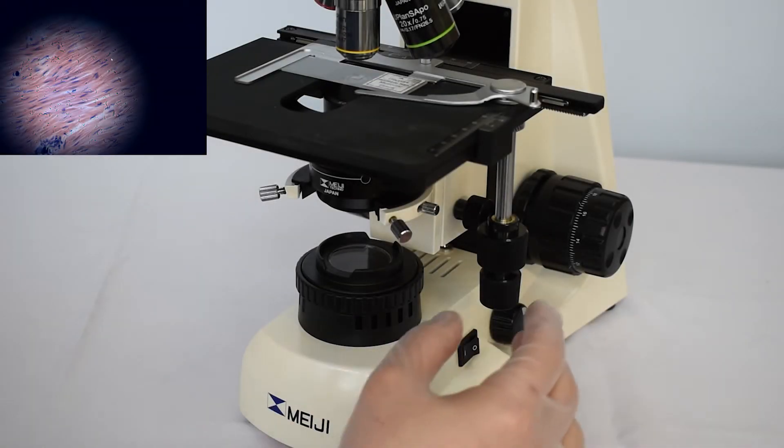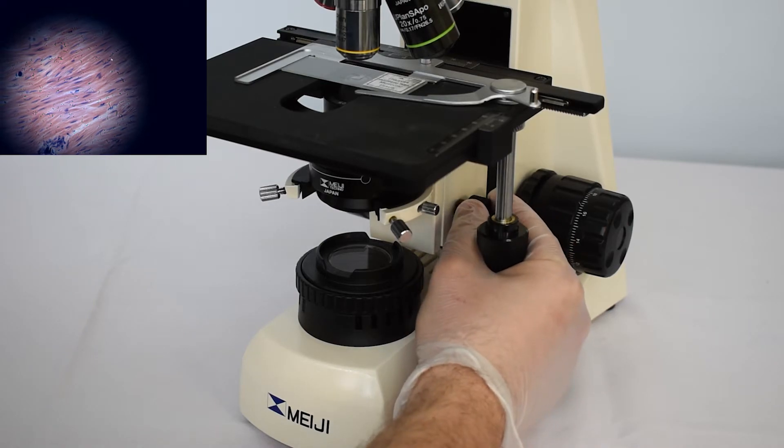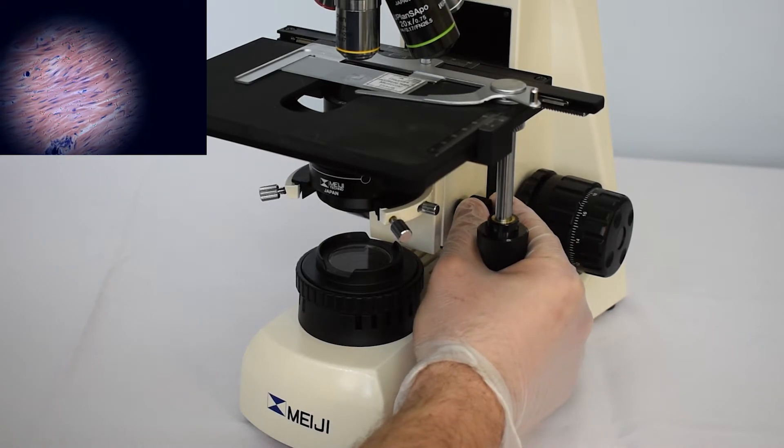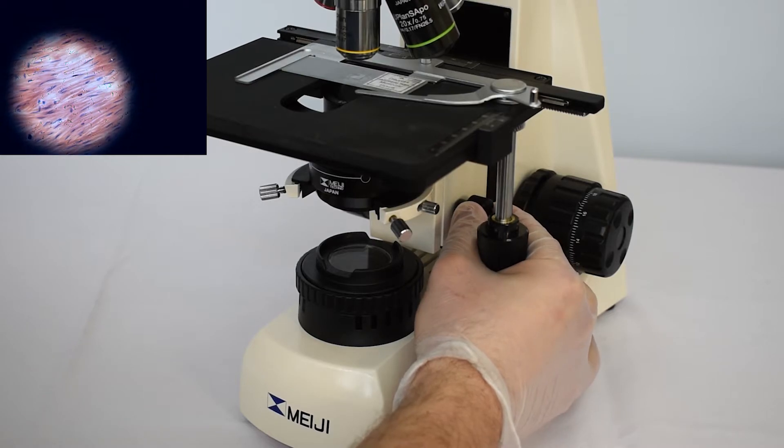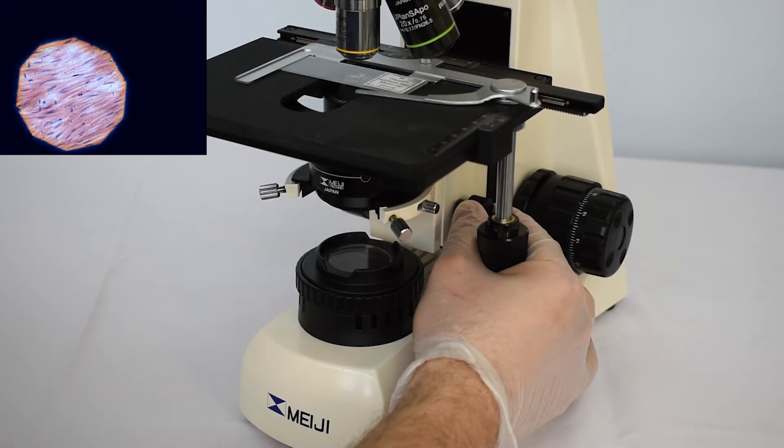Change the condenser height with the adjusting screw. It is necessary to achieve sharpness of the field diaphragm edges.